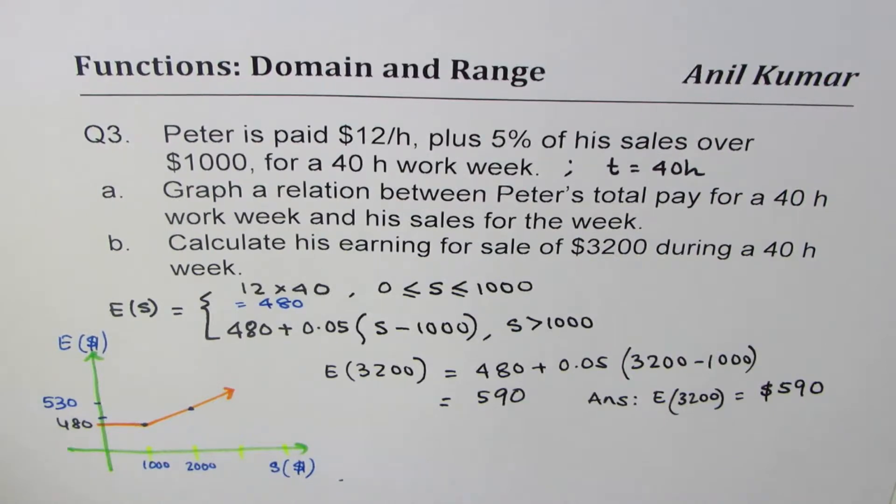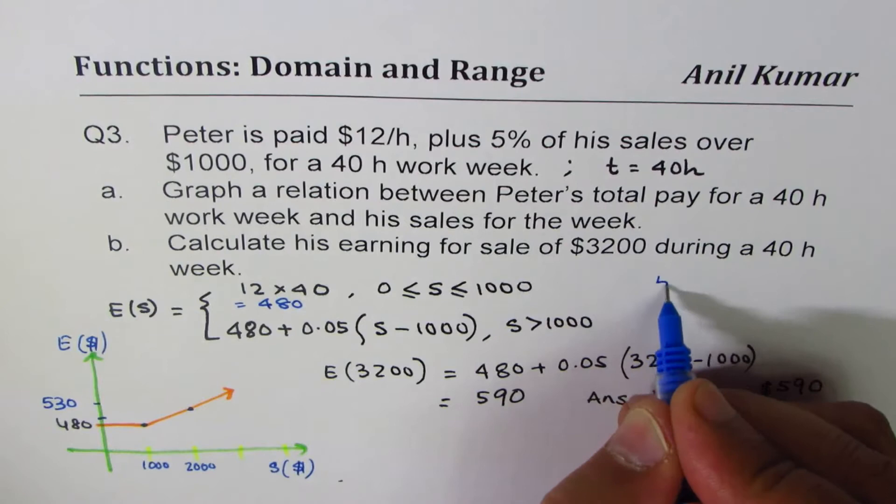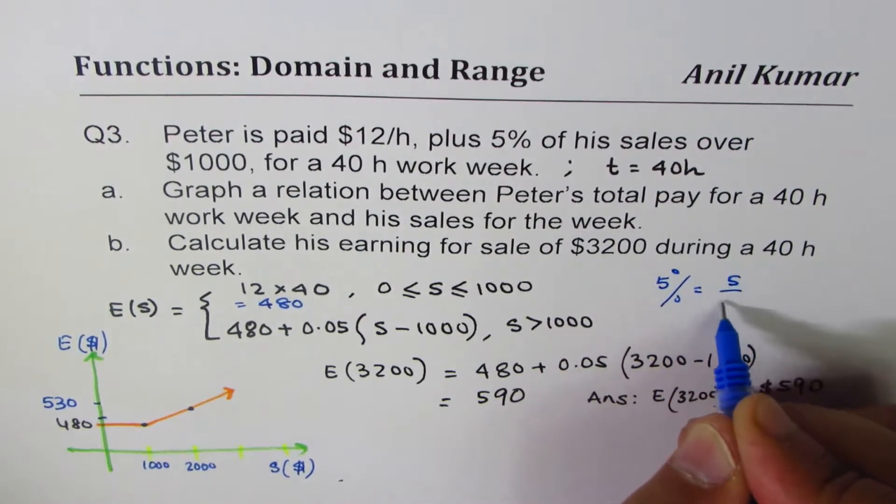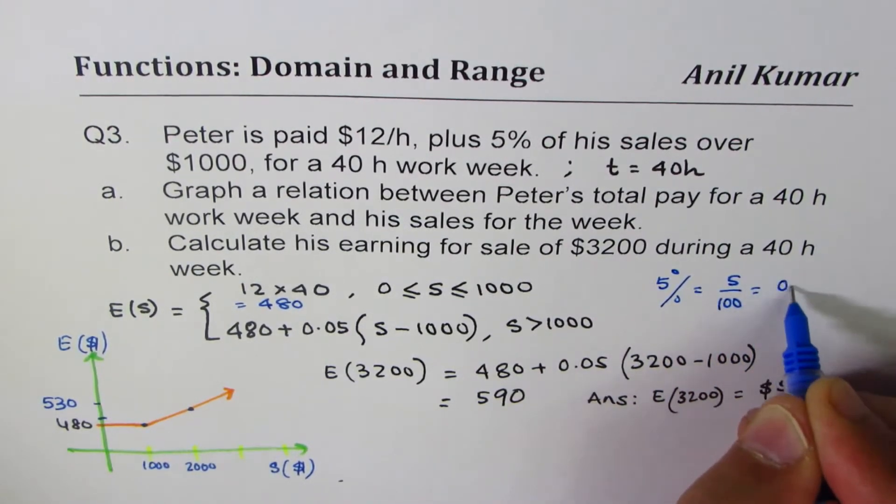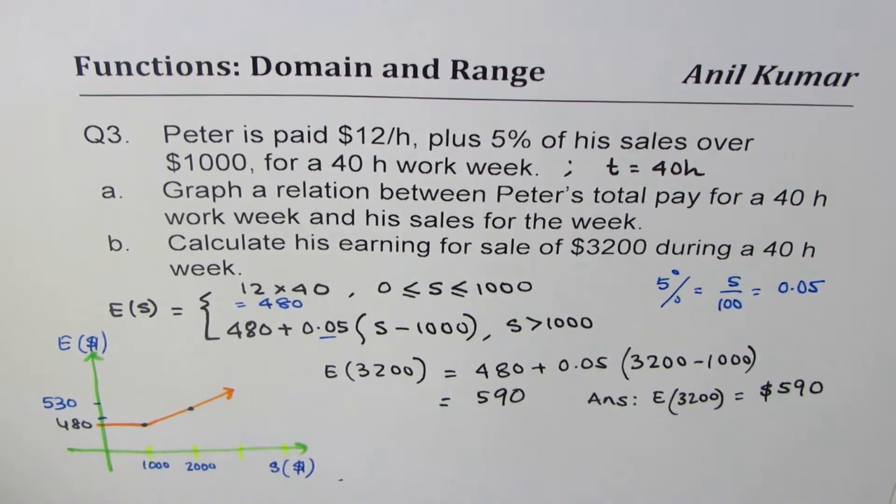So that is how we are going to do such questions. 0.05, how did we get that? 5% is 5 over 100 which is 0.05. So that's how we're getting this 0.05.